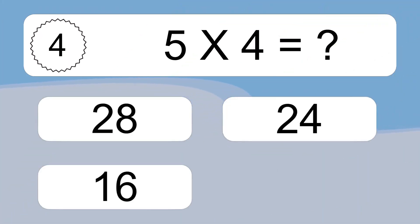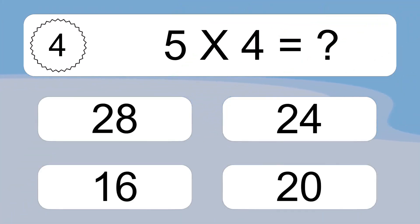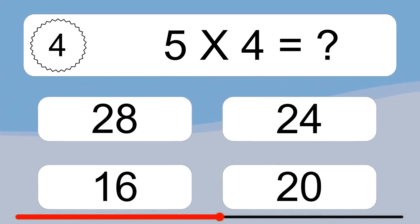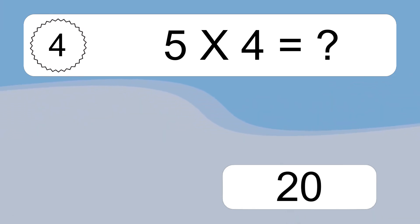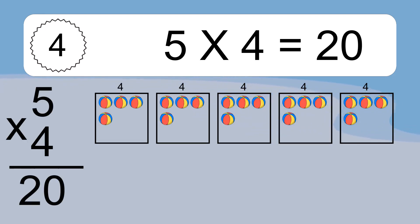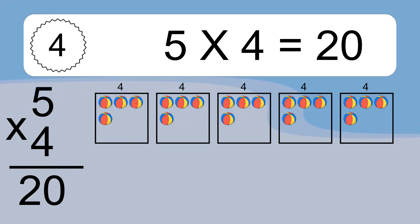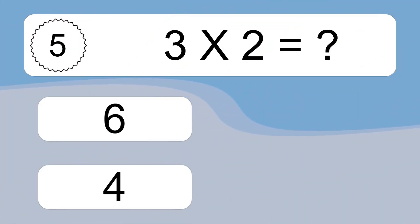5 times 4 equals what? 5 times 4 equals 20. We have 5 boxes, and each box has 4 colorful balls inside. If you count all the balls in all the boxes together, you will have 5 times 4 balls. This equals 20 balls.